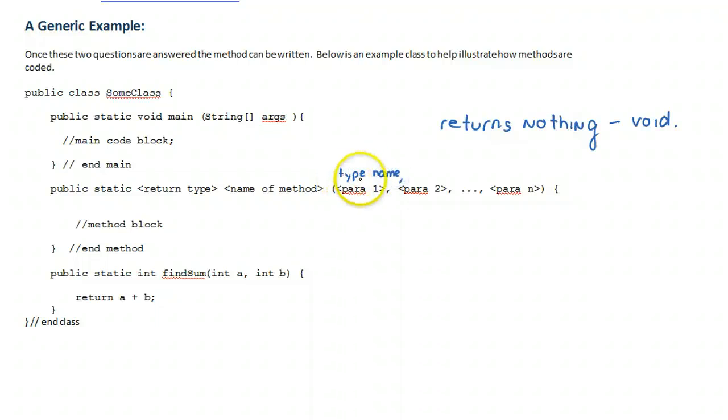And then we have parentheses and then we list all the parameters and the parameters consist of the type and the name. So we could have as many parameters as we want. So we have parameter one, parameter two, up to n parameters. And remember a parameter consists of a type and a name so I have to say int a, double b, char c, string word. And then inside the method we have the method block that actually does what needs to get done and then we end the method.